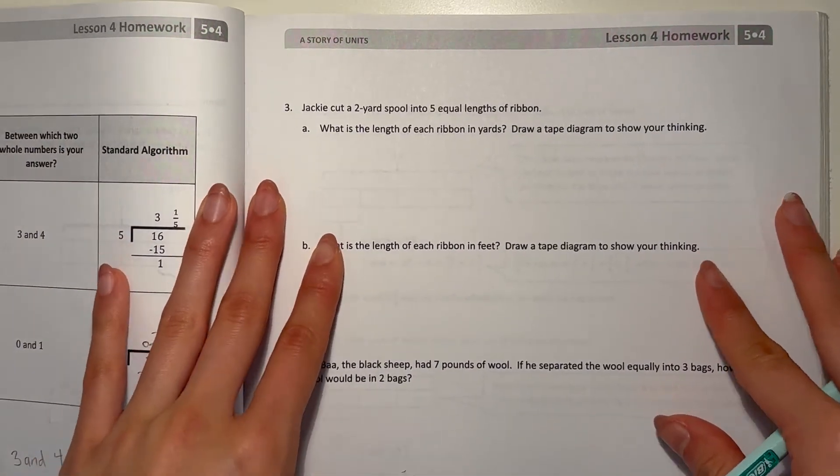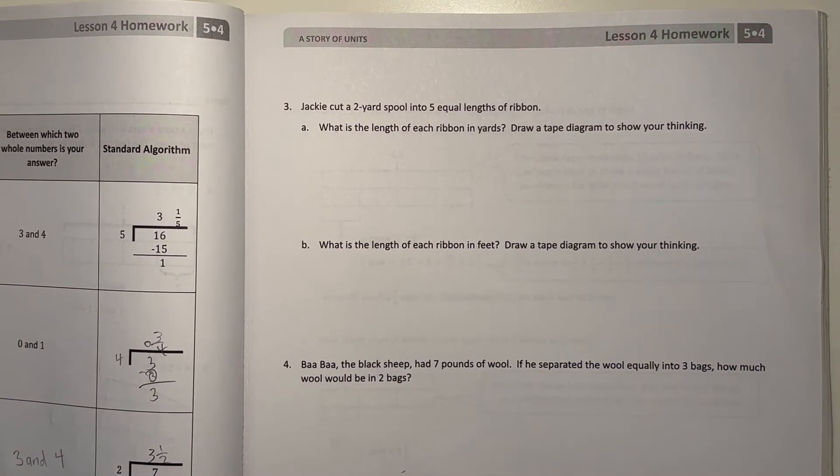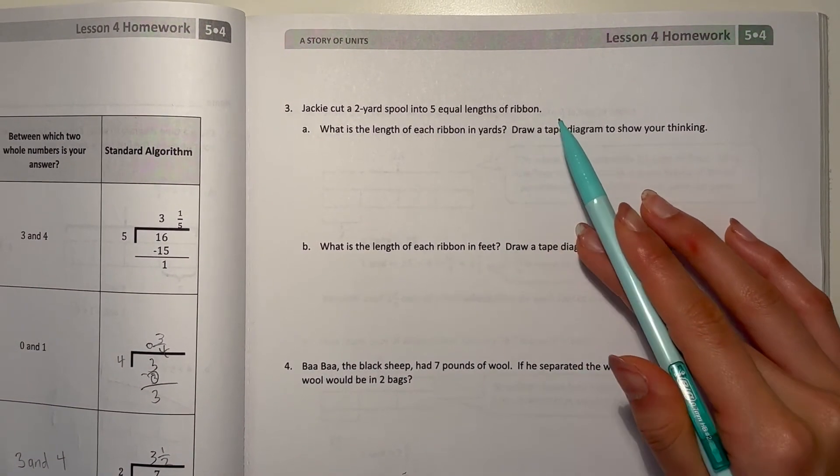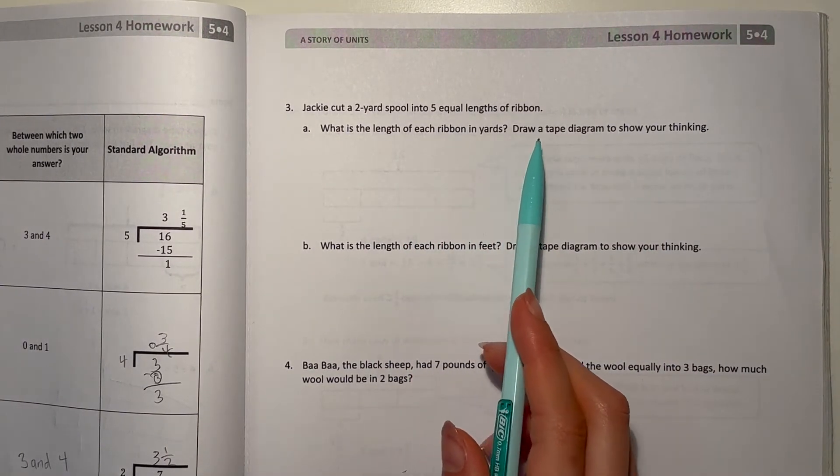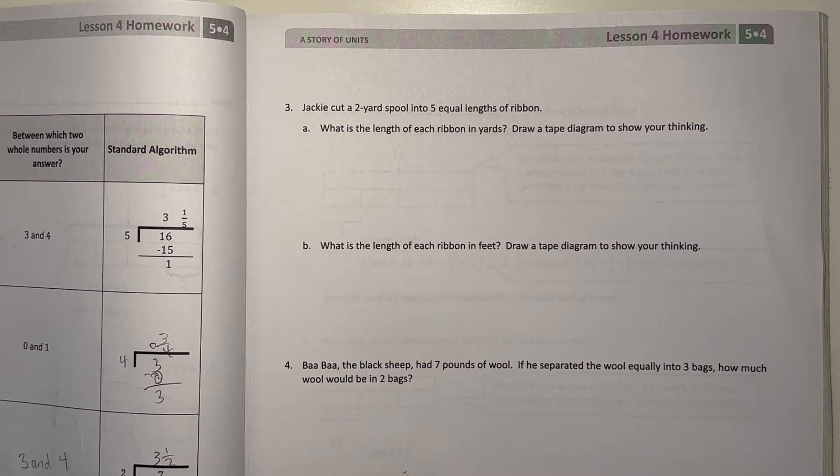And our final page, for 3, Jackie cut a 2 yard spool into 5 equal lengths of ribbon. A, what is the length of each ribbon in yards? Draw a tape diagram to show your thinking.